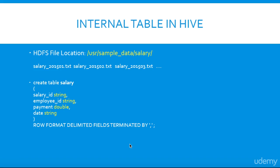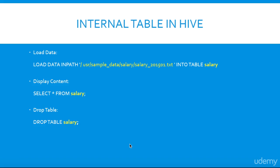Internal table. Hive internal tables are similar to when you create a table in traditional databases like MySQL — you first create the schema, then load the data into it, as you can see in the example here. We are creating a table and then loading the data into it. Look at the load statements here. Internal tables should be used when data is temporary and you want Hive to completely manage the lifecycle of the table and data. When you drop an internal table in Hive, both metadata and data are deleted.